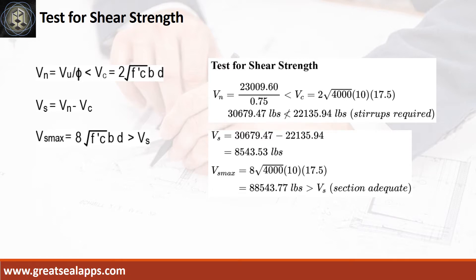The nominal shear force is 30,679.47 pounds, greater than 22,135.94 pounds concrete capacity. The shear force capacity of stirrup is 8,543.53 pounds, less than 88,543.77 pounds maximum stirrup capacity.